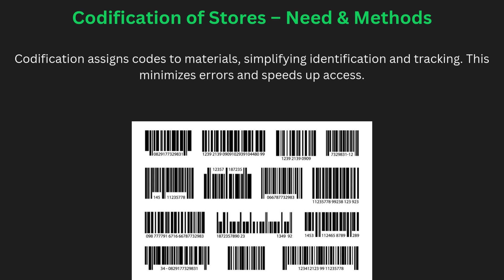Codification is the process of assigning a unique code to each item in the store to ensure easy identification and control. It helps in maintaining records and avoiding confusion between similar items. Codification can be done using different methods like alphabetical, numerical, or alphanumeric codes, which can also be scanned by a barcode scanner. As you can see on screen, items in a store are labeled accordingly. Proper codification improves efficiency and reduces errors in store management.